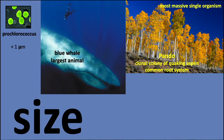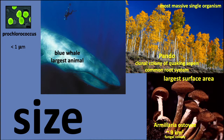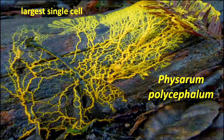You might also ask: what about the largest area? That probably belongs to Armillaria ostoyae — a fungal colony covering nine square kilometers. That gives you a sense of the diversity of sizes of life forms on Earth.